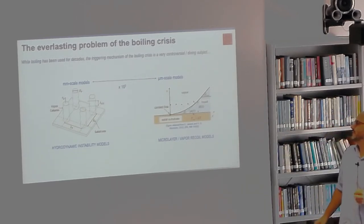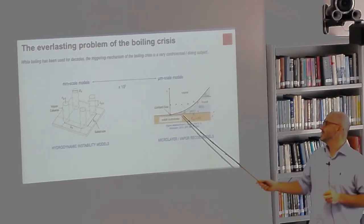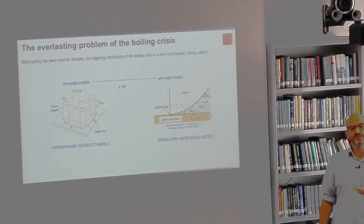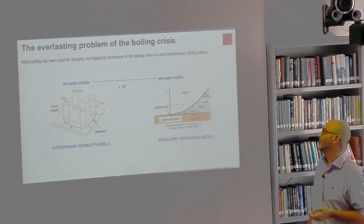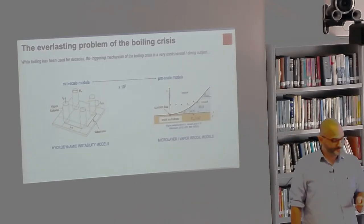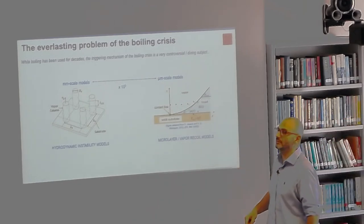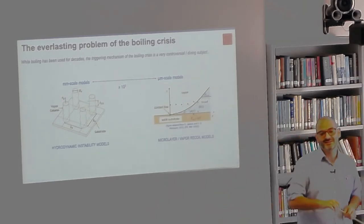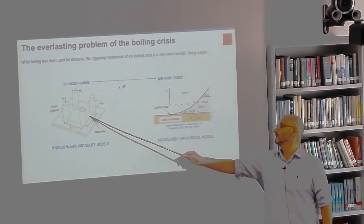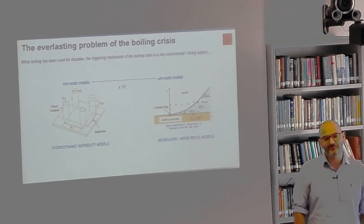Many other models come to similar quantitative conclusions but rely on a much more detailed description, suggesting that boiling crisis is triggered by an instability of the triple contact line — going from a length scale of millimeters down to microns or even less. So still today, if I ask the audience, people will either pick the hydrodynamic model or the contact line model, and I'm sure you can verify my hypothesis.